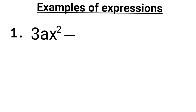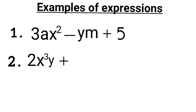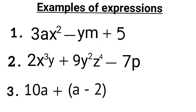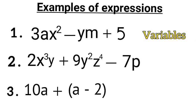Some examples of expressions are: example one, ax squared minus ym plus 5; example two, 2x cubed y plus 9yx squared z to the power 4 minus 7p; and example three, a plus (a minus 2). When we look at all the examples, we find operational signs, variables, and numbers in them.